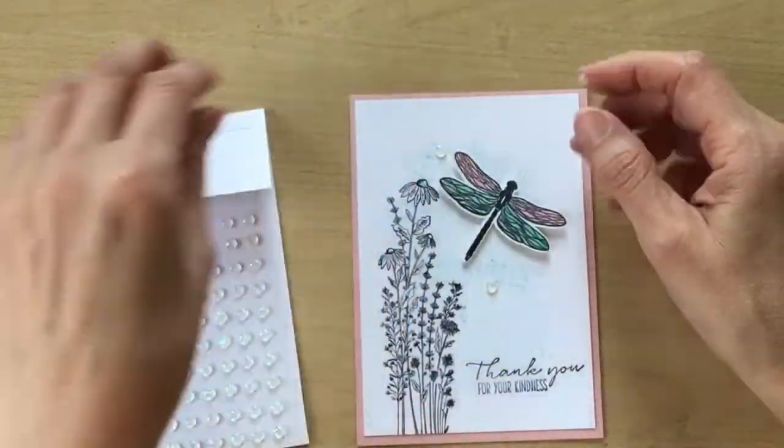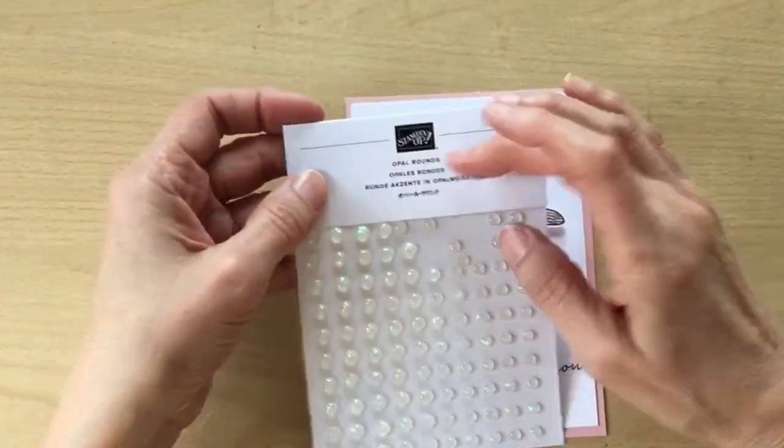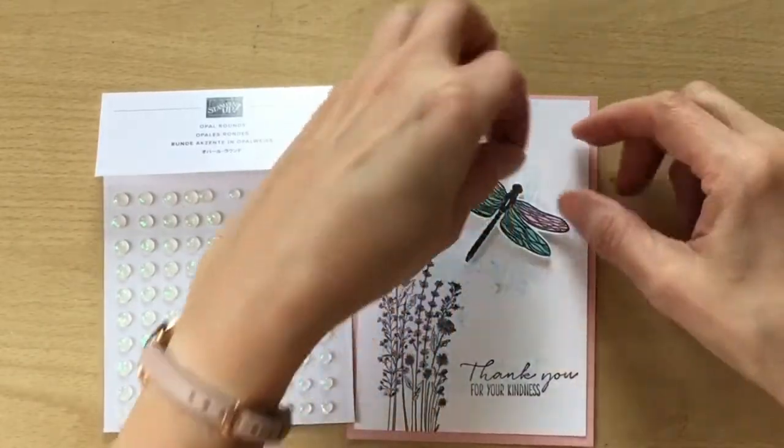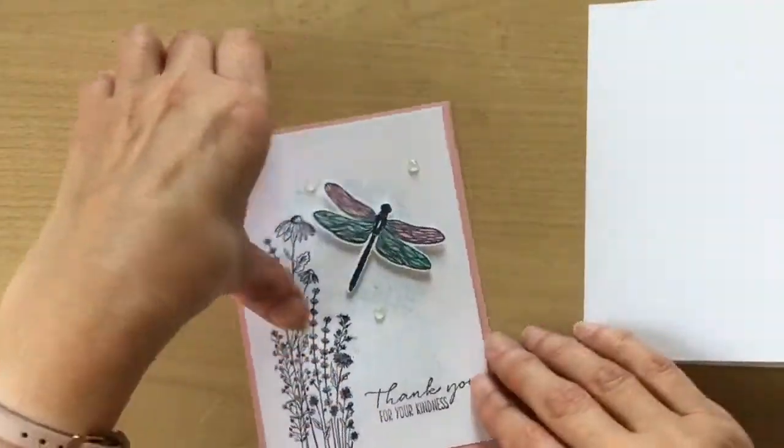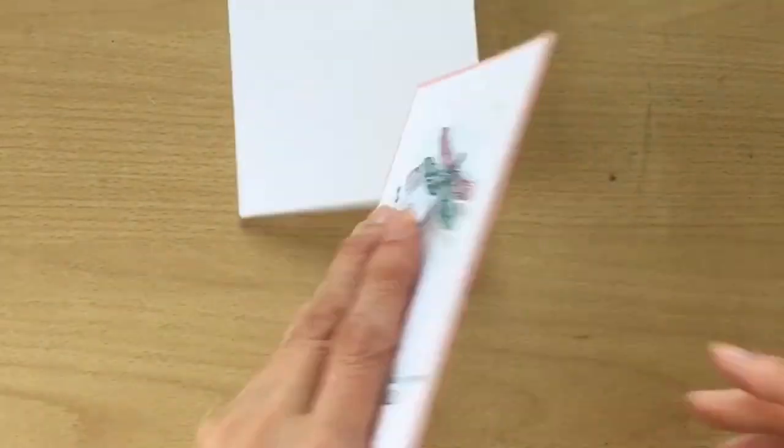And to finish the background I'm using some opal round embellishments. I'm just using three of them. And then all we need to do is stick this to the front of the card base.